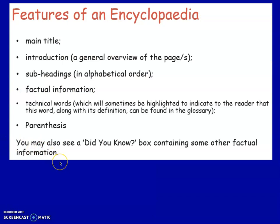Here are the features of an encyclopedia. You have the main title, an introduction, and subheadings within your section in alphabetical order — which is what we've done — and obviously the subheadings in the entire encyclopedia will be done in alphabetical order too. It will include technical words, which will sometimes be highlighted to indicate to the reader that this word, along with its definition, could be found in a glossary. We don't have time to do a glossary, especially not with you guys at home, so you might just see some technical words in our example. There's also a lot of parentheses, just to add extra information, which you guys know about because we've been looking at parentheses quite a lot recently. You might also see a 'Did You Know?' box containing some other factual information.